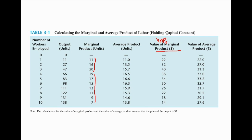The value of marginal product of worker tells us the additional dollar of revenue the firm earns for each additional unit of worker employed, holding capital constant because this is the short run. Notice there is a connection between the value of marginal product and the law of diminishing returns — the VMP of worker first increases and then decreases as we hire more and more workers. The last column is the value of average product of worker, denoted VAP with subscript E.